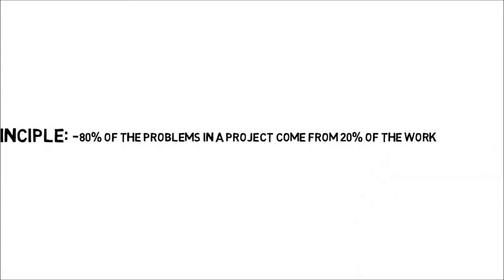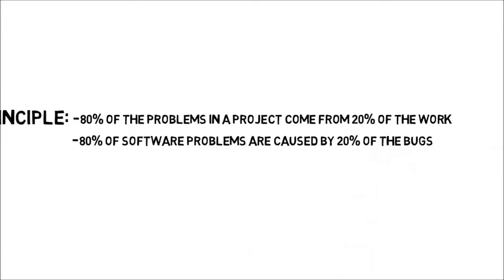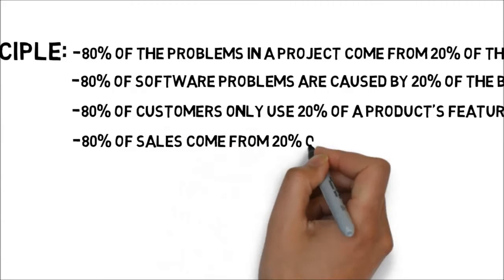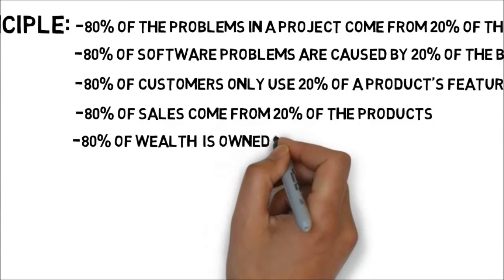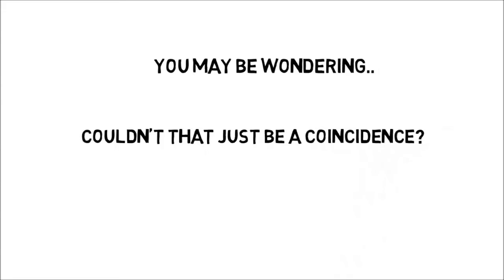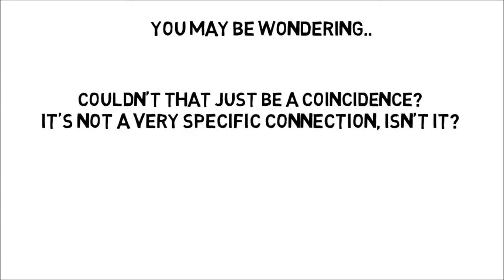About 18% of words are used 82% of the time. Other examples of Pareto's Principle: 80% of problems in a project come from 20% of the work; 80% of software problems are caused by 20% of the bugs; 80% of customers online only use 20% of a product's features; 80% of sales come from 20% of the products; and 80% of wealth is owned by 20% of the people. You may be wondering — couldn't that just be a coincidence? It's not a very specific connection, is it?